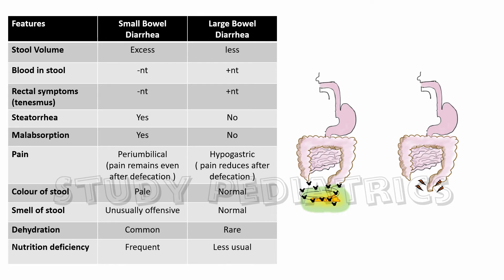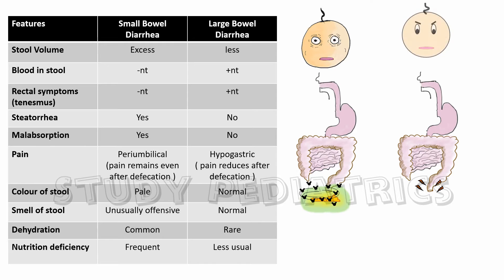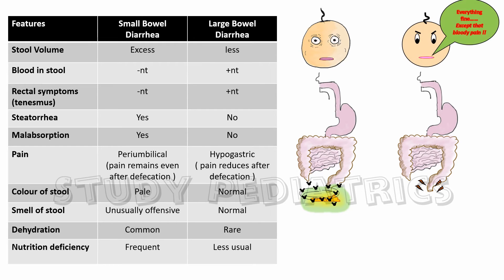You will notice this more in your surgical postings — a stoma bag on the right lower abdomen smells terribly bad in comparison with a left-sided stoma bag. The remaining parameters like dehydration and nutritional deficiency can easily be understood from the above discussion.